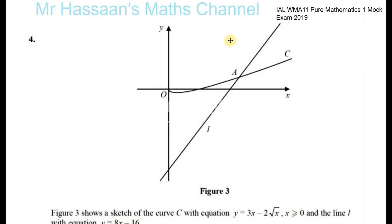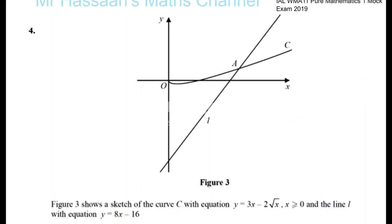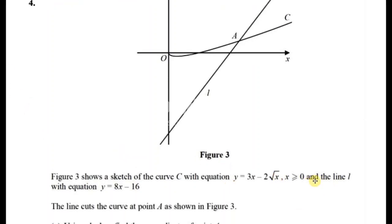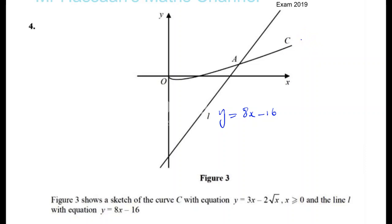This is question number four from the P1 mock exam from 2019. Figure three shows a sketch of the curve C with equation y equals 3x minus 2 root x, where x must be greater than or equal to 0 — it doesn't continue for negative x because the square root would be undefined. The line L has equation y equals 8x minus 16.